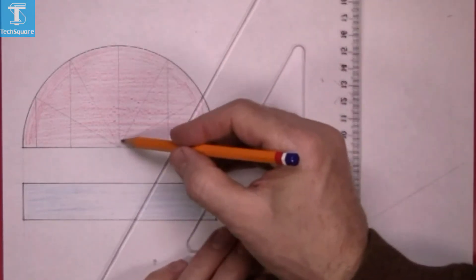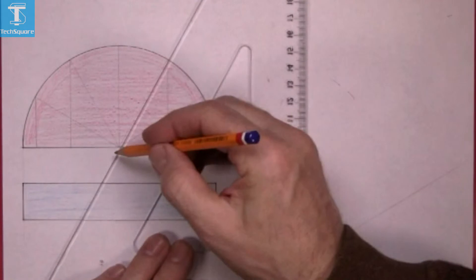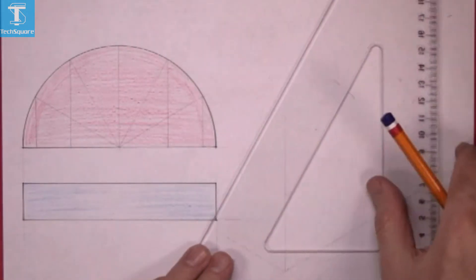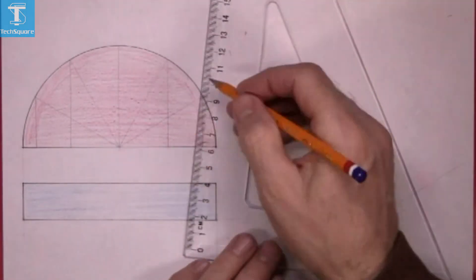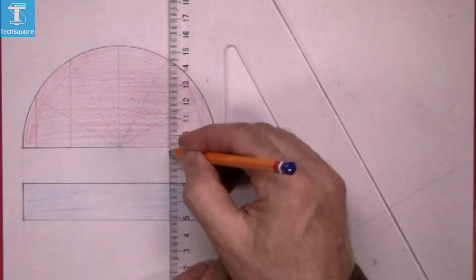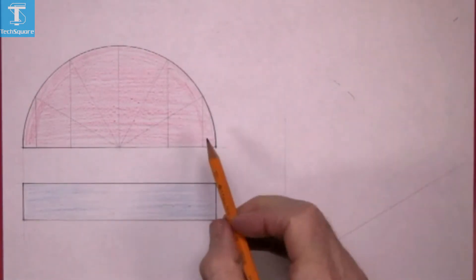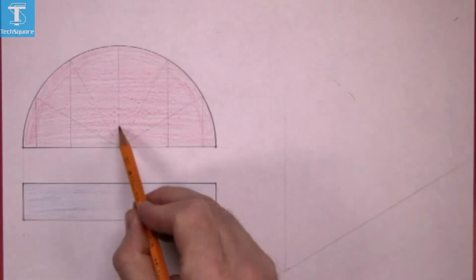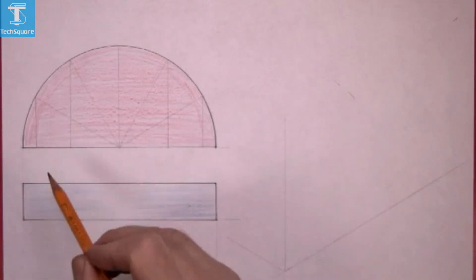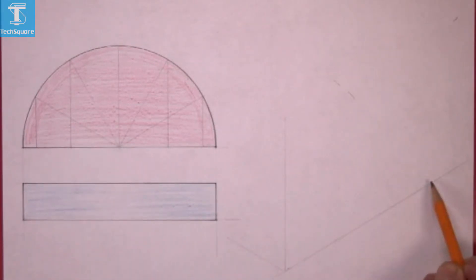And then again from the centre up at 60 degrees and bring that point back down vertically to get the point on the diameter. So we have one, two, three, four points on the diameter. Now we need to get those spaces marked off on this line here.